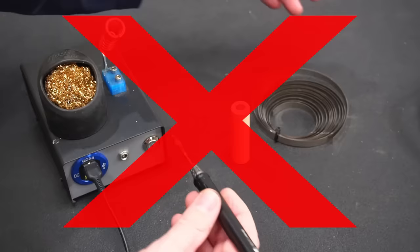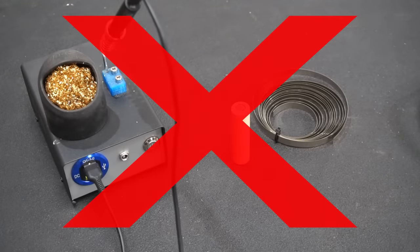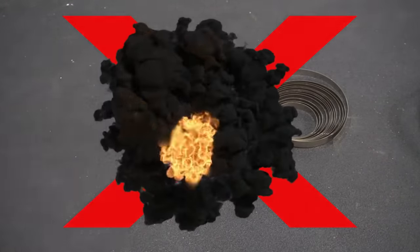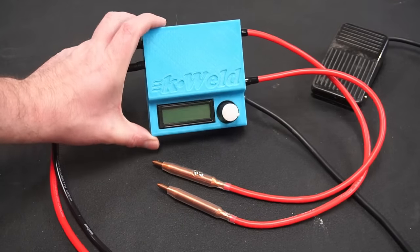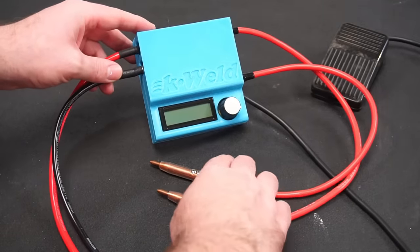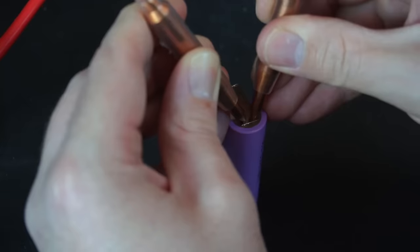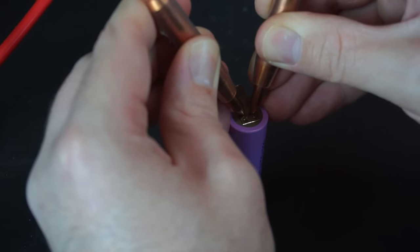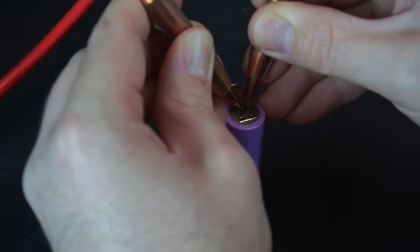Excessive heat from the iron can damage the cells or at worst can cause the cells to catch fire or explode. So I'll be using this. It's a K-Weld spot welder. It's a fantastic spot welder that's super easy to use, and if you want to learn more about the K-Weld, then click the link in the top right corner.